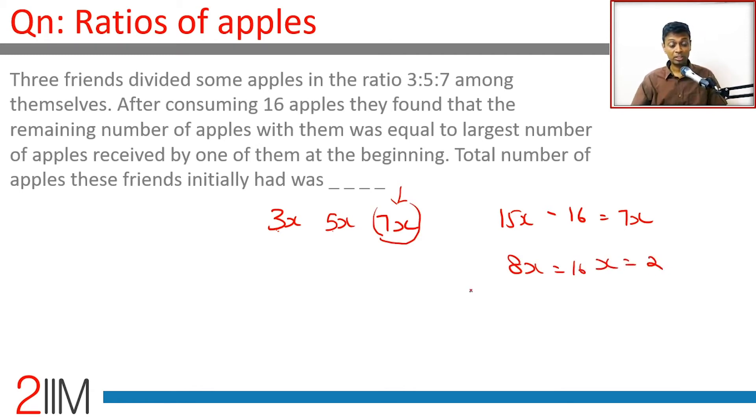The total number of apples these friends initially had was 15x, which is 30.